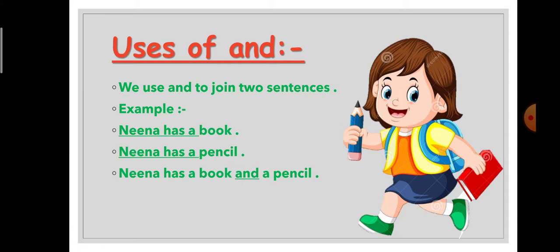We want to join these two sentences, so we will use AND. We need to find what is common in these two sentences. The common words are 'Nina has a.' These words we will use one time, and the remaining words we will join with the help of AND — Nina has a book and a pencil.